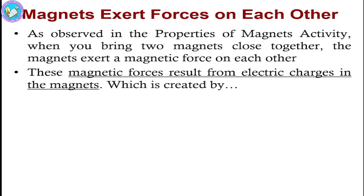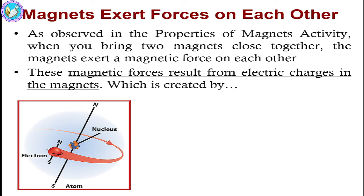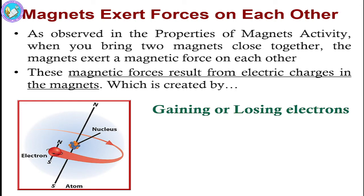The next property is that magnets exert forces on each other. When you bring two magnets closer together, they will exert a force between each other. It might be a repulsive force or it may be an attractive force. This force takes place due to the movement of electric charges in the magnet, which is created by gaining or losing of electrons.